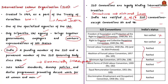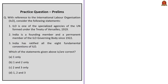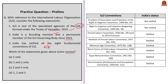With this information, let's take up the given question. Three statements are given and you have to choose correct statements. Statement 1 says ILO is one of the specialized agencies of the UN formed under the Treaty of Versailles in 1919 — this is correct. India is a founding and permanent member of the ILO governing body since 1922 — also correct. India has ratified six out of eight ILO conventions — this makes the third statement incorrect. So the correct answer is option B, 1 and 2 only.